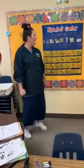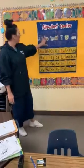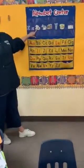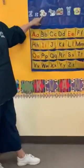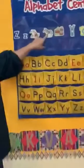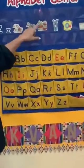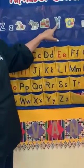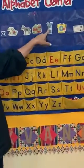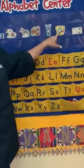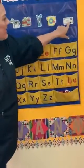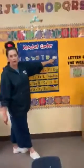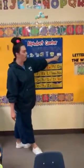Okay, let's look at our alphabet wall. And we have zigzag, zebra, zoo, zipper, zero, and zip code. We all live in a zip code.